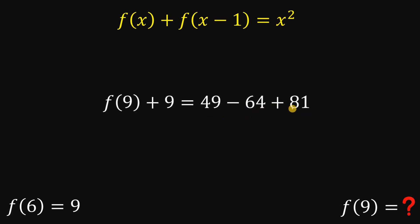Now 49 - 64 + 81, this will give us 66. Now subtract 9 on both sides. f(9) is 66 - 9 or simply equal to 57.